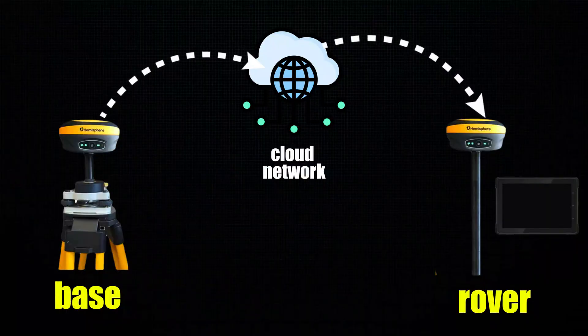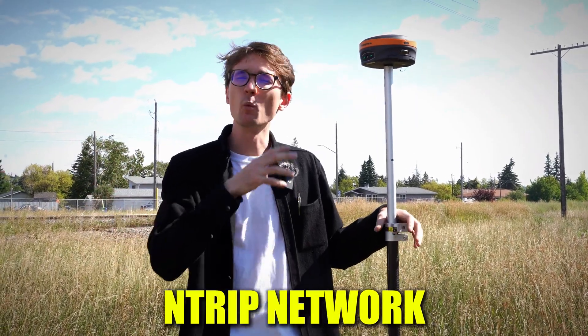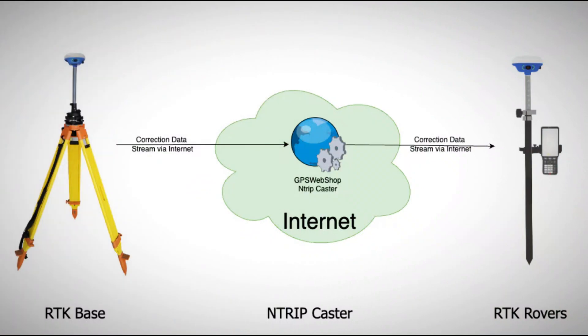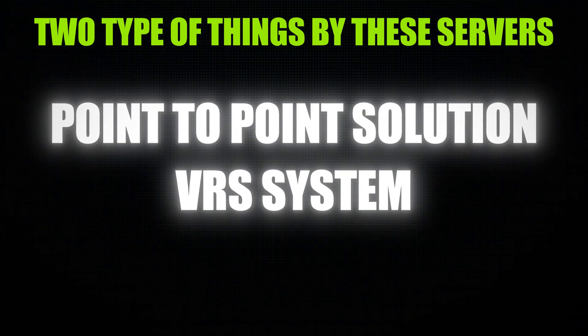With a broad overview, what is happening is we're piping data into a cloud that's piping it out to your receiver. It's the exact same way that your UHF radio is working — there's just a little bit of a computer in the middle. So when we talk about a server with an nTrip network, all it's doing is taking the base station information, sending it to a computer, and that computer is sending it out to your rover. It's almost like using a repeater when you're using external radio. But there are two main types: a point-to-point solution or a VRS system.